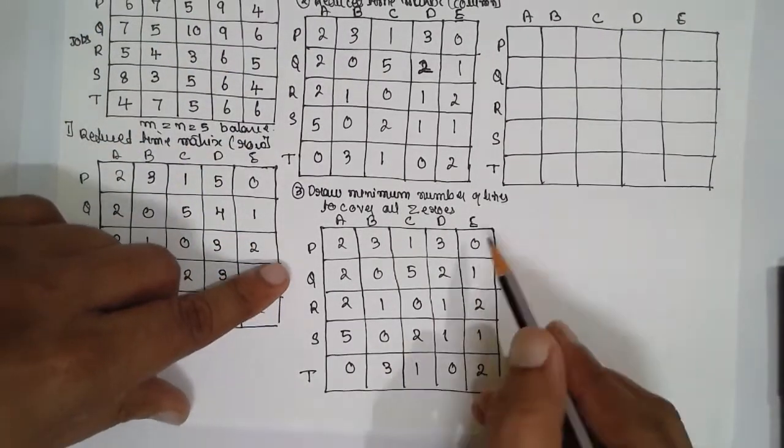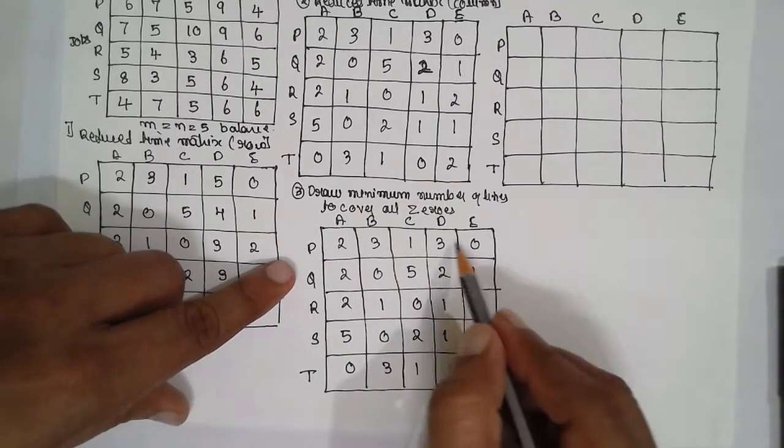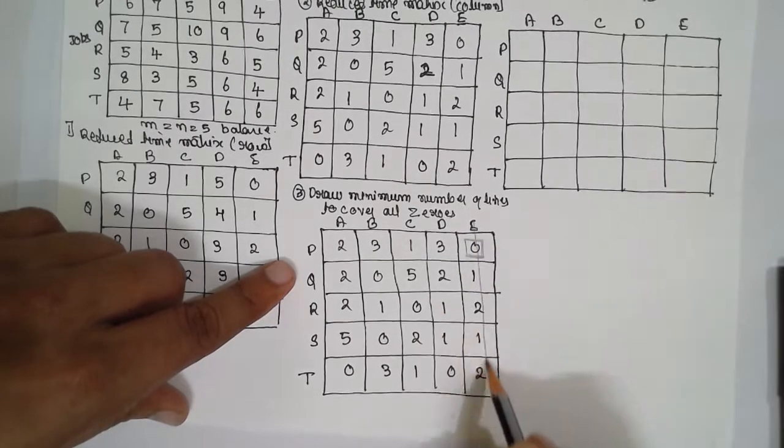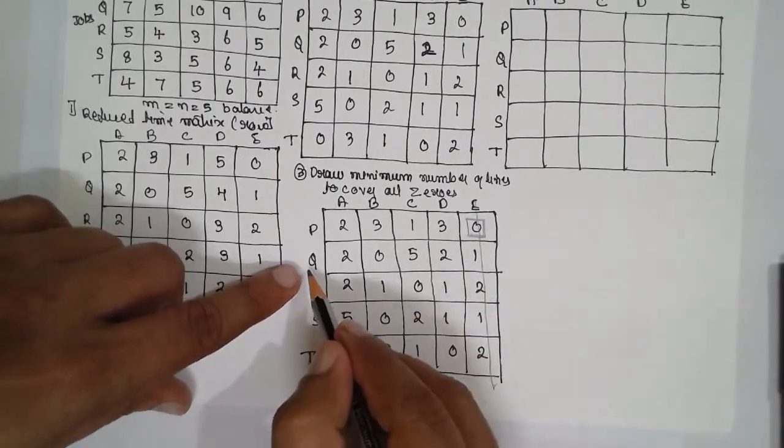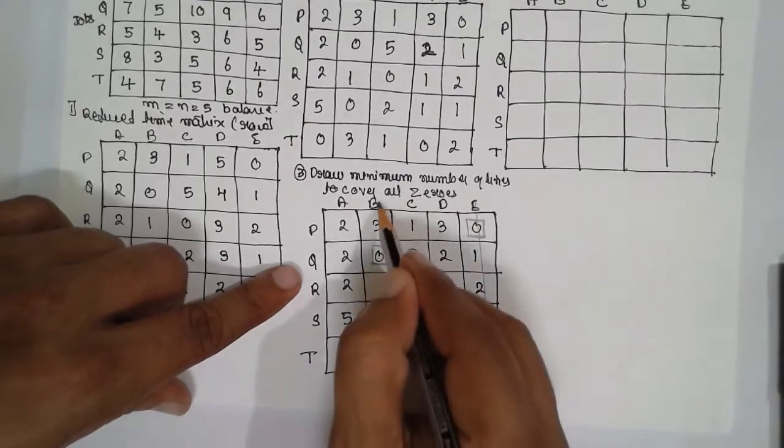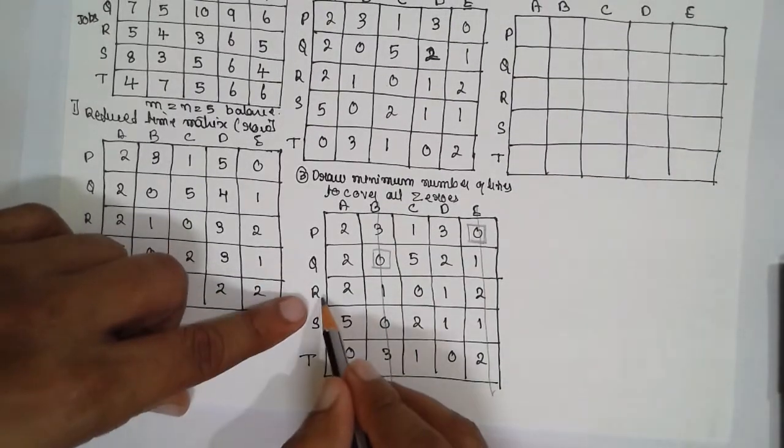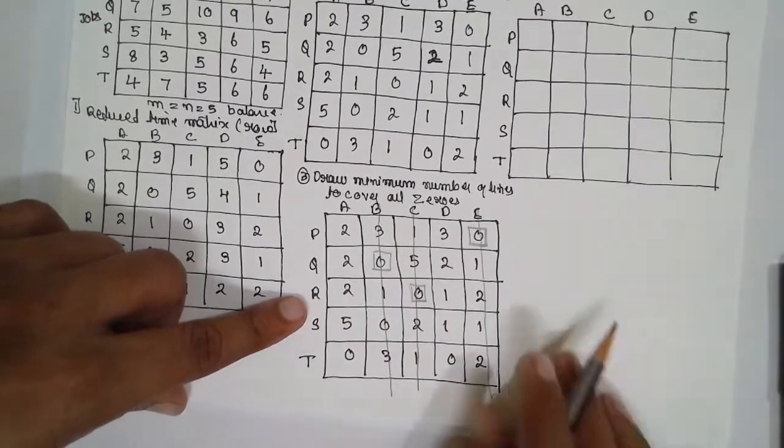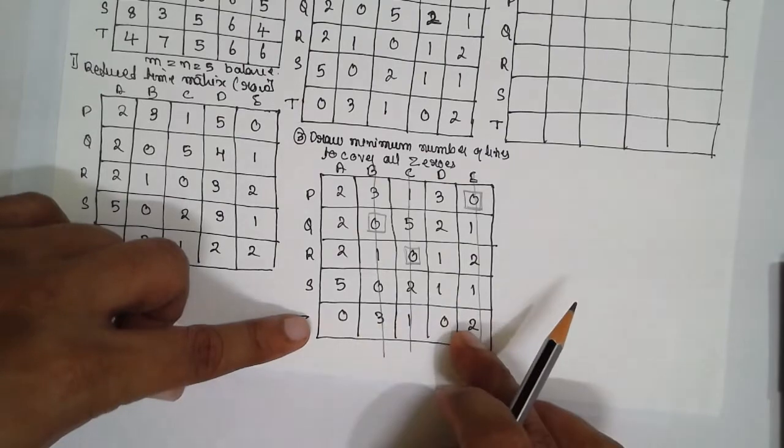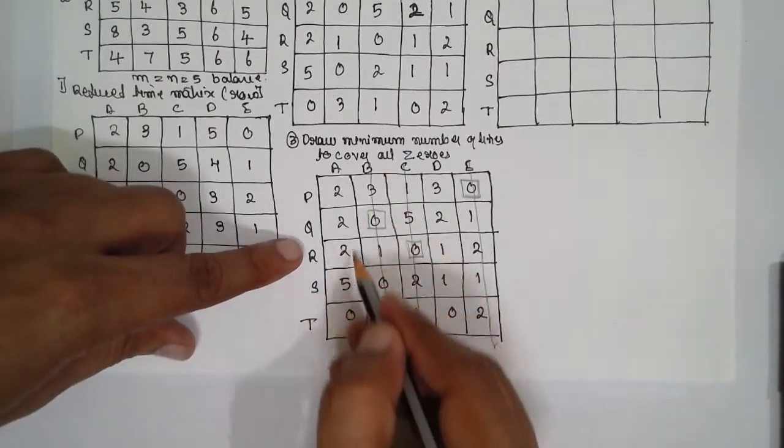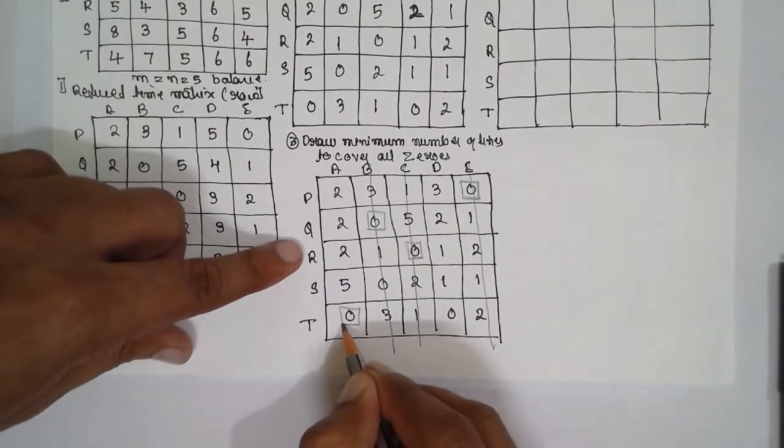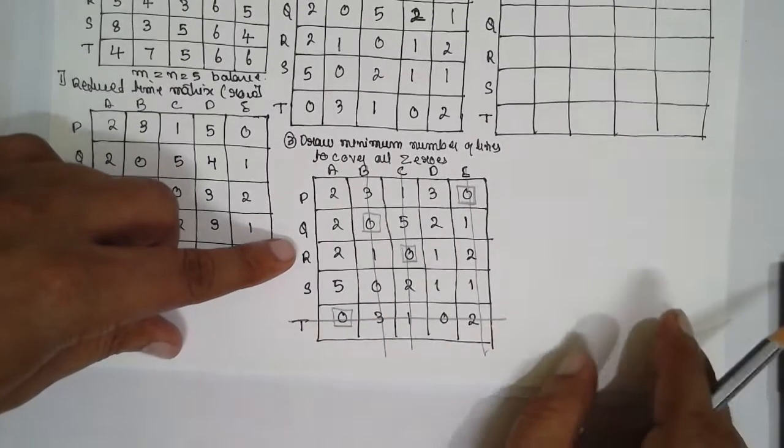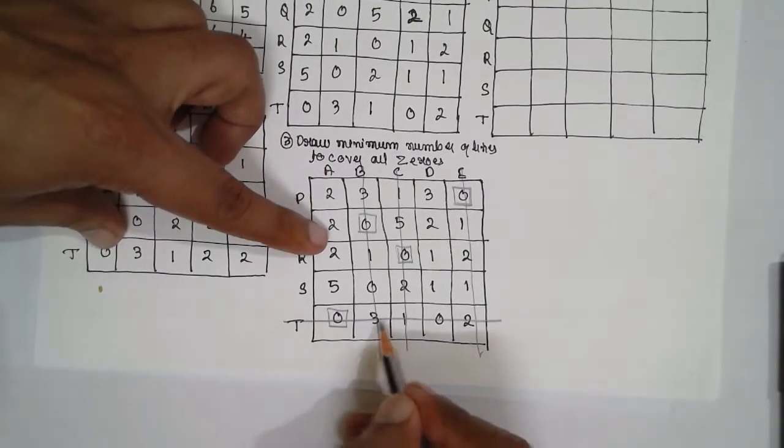Next, assign the values. Now the single 0 is there, go for assigning. Assign it. If you are considering row-wise, you have to eliminate the column. Next one, single 0, assign it, eliminate column. Single 0, eliminate column. There is no 0 here. There are two 0s, therefore go for column-wise. Assign it. Now eliminate row. Further there is no 0s here. Further there is no 0. Now overlapping.